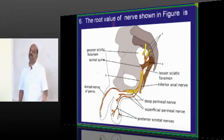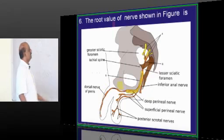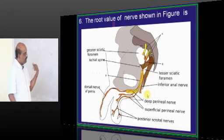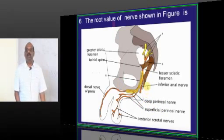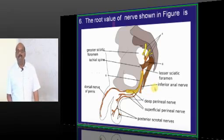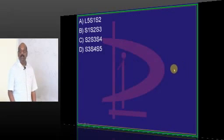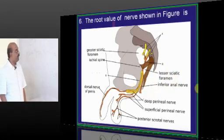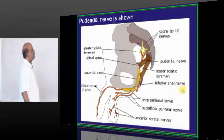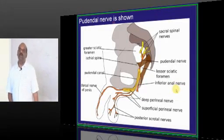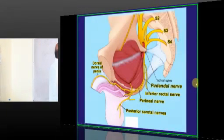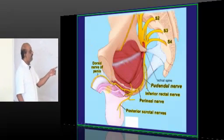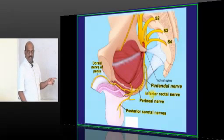What is the root value of the nerve being shown to you, which is passing through the lesser sciatic foramen? Typically, inferior anal nerve and deep perineal nerve are all rooting out of it. It's a classical example of a pudendal nerve. What is the root value of pudendal nerve? S2, S3, S4 is the root value of pudendal nerve. The pudendal nerve gives rise to inferior rectal nerve, perineal nerve, posterior scrotal nerve, dorsal nerve of penis, et cetera.